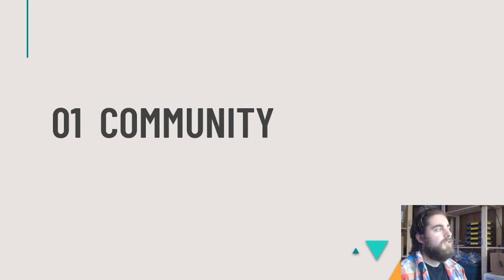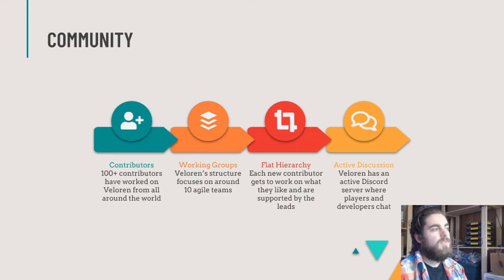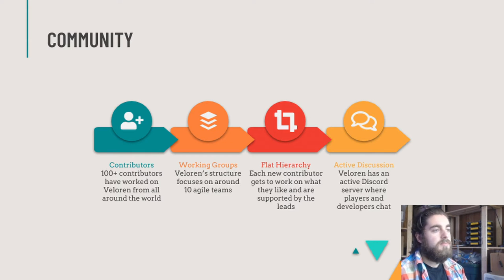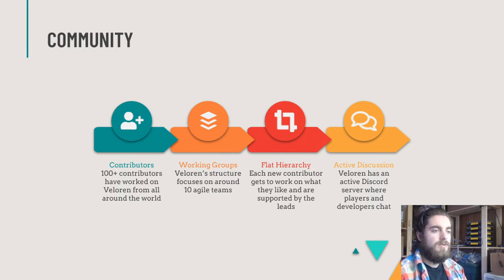Veloran has over 100 recorded contributors who have added code to the game, plus many artists, composers, designers, and writers. We use a working group structure with 10 agile teams, keeping the hierarchy very flat — each team lead works on the ground level with beginners or anyone who needs help. We use Discord as our main form of communication, which lets us easily discuss things with players and stay in touch with developers.